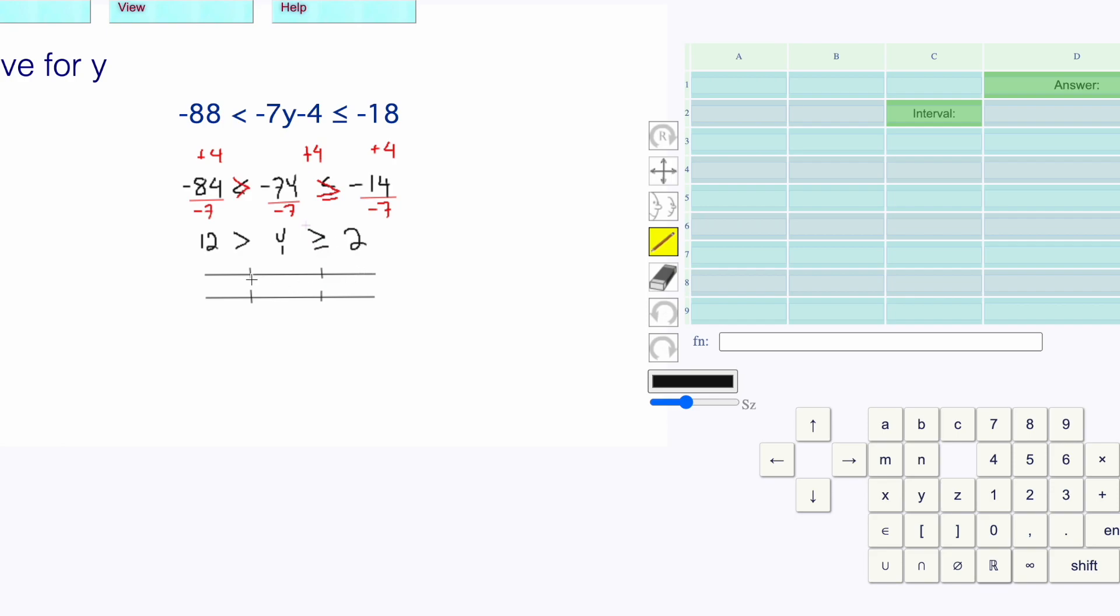I'm going to put the smallest on the left, so 2 and 12. The y is less than 12. Hollow on the 12 and we're going to the left. Here we're going to get a solid dot on the 2, going to the right.